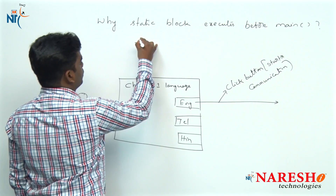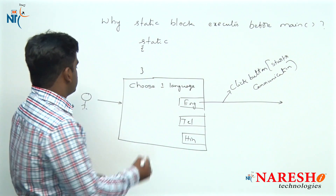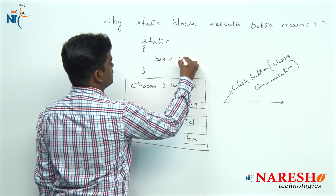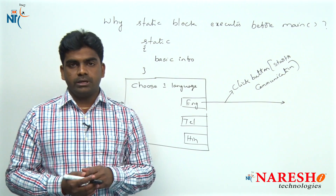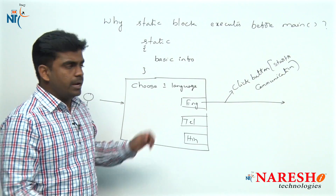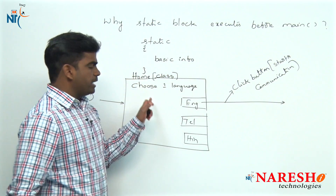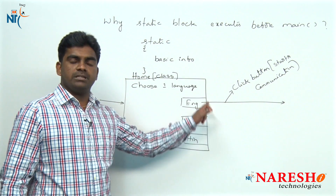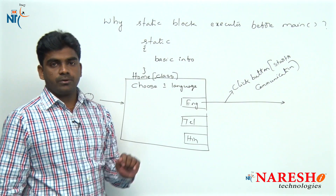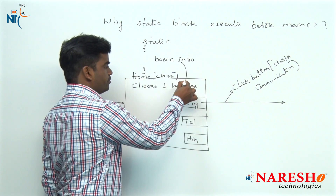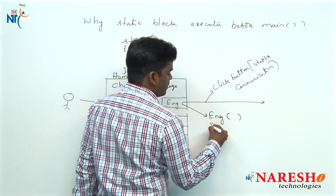A static block provides basic information at the time of class loading. Generally every faculty says: a static block executes at the time of class loading. We can call a class a page — for example, a login page or a home page. At the time of page loading, i.e., at the time of class loading, whatever basic information is required to start your communication is provided by the static block. Blocks always provide basic information, and with that basic information only you can start the communication. Communication means using methods — here, clicking English is just a method.